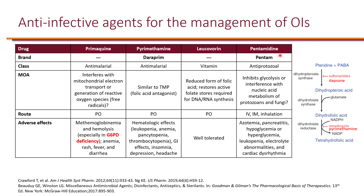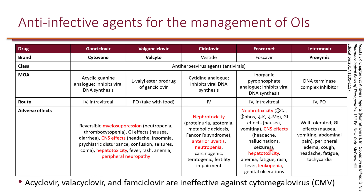Lastly, we have pentamidine, which is available in an inhalation formulation but not as an oral formulation. Now let's look at antiviral agents used for management of opportunistic infections — specifically cytomegalovirus (CMV). Because acyclovir, valacyclovir, and famciclovir are ineffective against CMV, we will not discuss them.